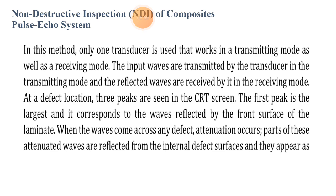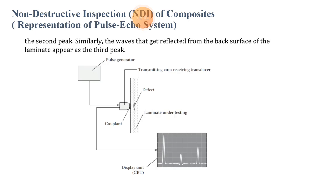Next is the pulse echo system. In this system, only one transducer is used that works in both transmitting and receiving modes. The input waves are transmitted by the transducer in transmitting mode, and the reflected waves are received in receiving mode. At a defect location, three peaks are seen on the CRT screen. The first peak is the largest and corresponds to waves reflected by the front surface of the laminate. When the waves encounter a defect, attenuation occurs. Part of the waves are reflected from the internal defect surface and appear as the second peak. The waves reflected from the back surface of the laminate appear as the third peak.